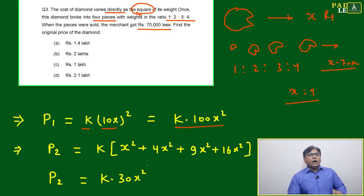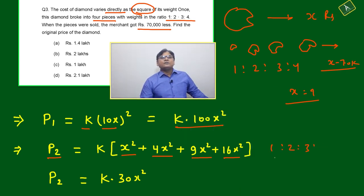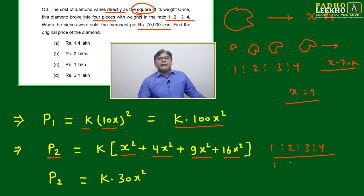Now individually we will count P₂. This price P₂, if you are selling in four different pieces, it will become x², 4x², 9x², 16x². What we are doing? 1:2:3:4 ratio, we are making the square. One becomes x, two becomes 2x, three becomes 3x, four becomes 4x.